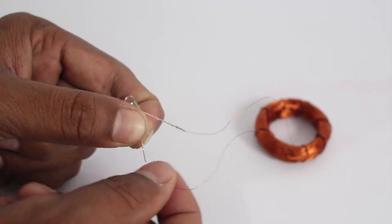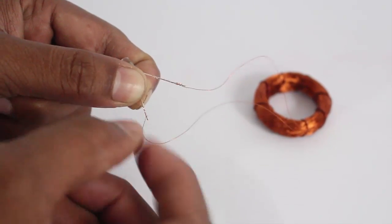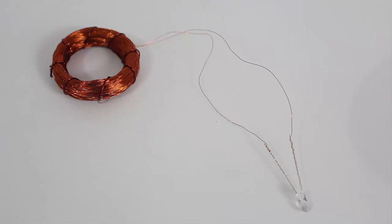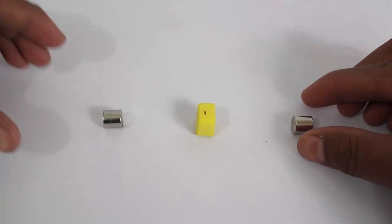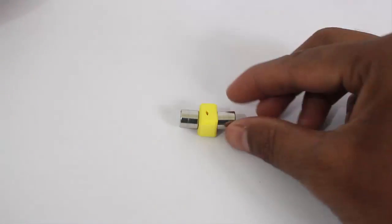Then scrape both ends of this coil to remove the insulation and connect them to an LED. So this is the coil along with the LED.